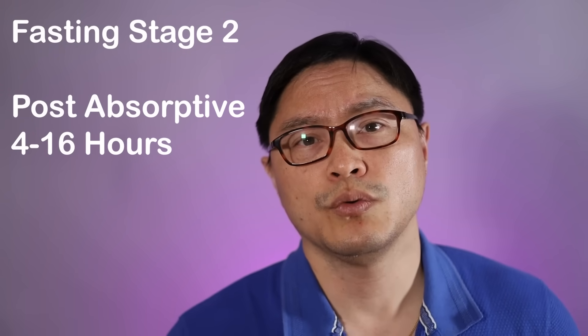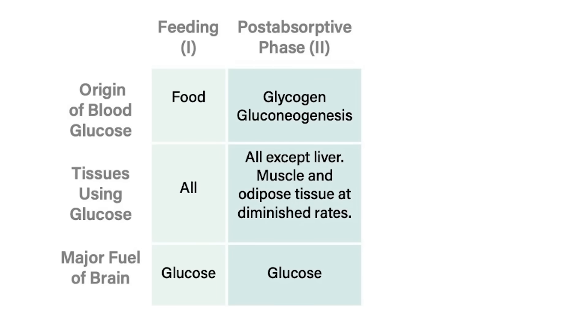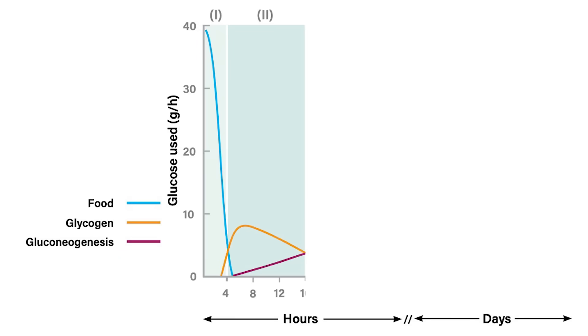In stage two, Dr. Cahill called this the post-absorptive stage, lasting from four to 16 hours. The body is digesting the energy it just took in. Insulin and mTOR start to fall, and most cells are still using glucose, but now coming from glycogen storage in the liver rather than food. The liver breaks glycogen back into glucose and sends it out. On average the liver can store about 20 to 24 hours worth of glucose. If you're eating a very low-carbohydrate ketogenic diet, there's simply no glucose available and the body uses ketones.